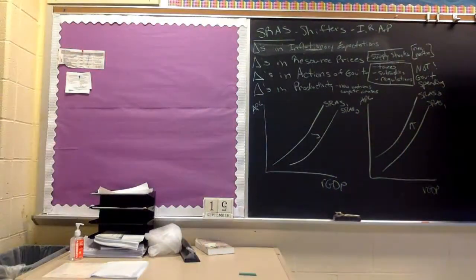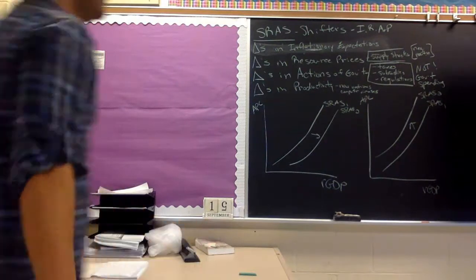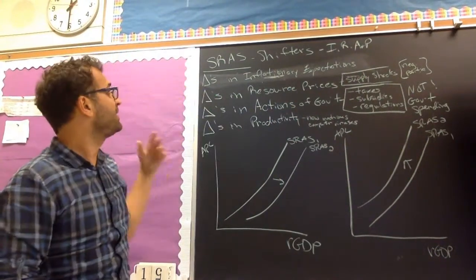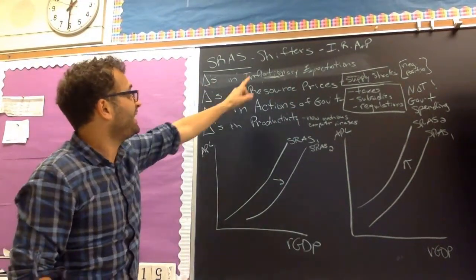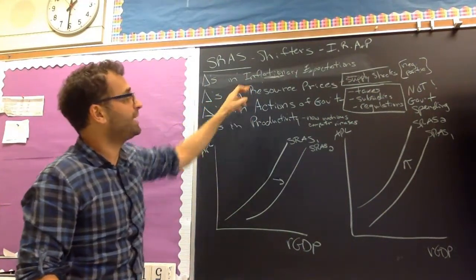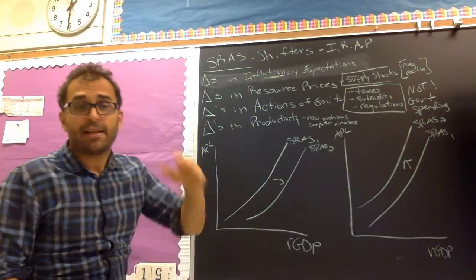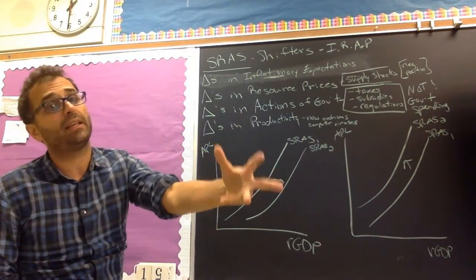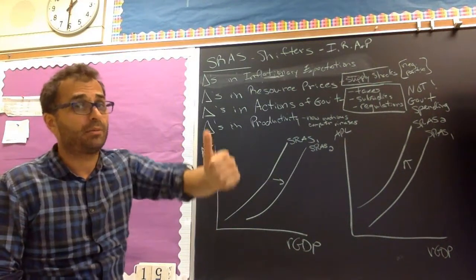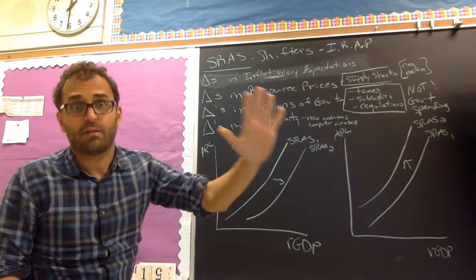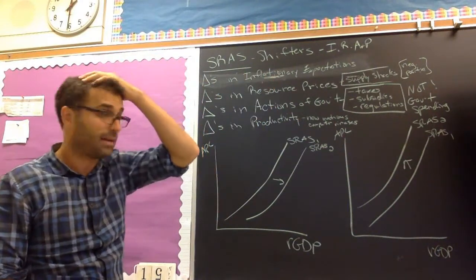So before we get to long run, let's look at the short run. Now the short run. Short run aggregate supply, you can memorize it. It's IRAP. Write these down in your notes. It's changes in I, IRAP. Changes in inflationary expectations. You know what that means. If people expect prices to go up, that means prices of all things go up, including inputs. So supply will shift left. If they expect prices to go down for inputs, then supply will shift to the right. Aggregate supply.